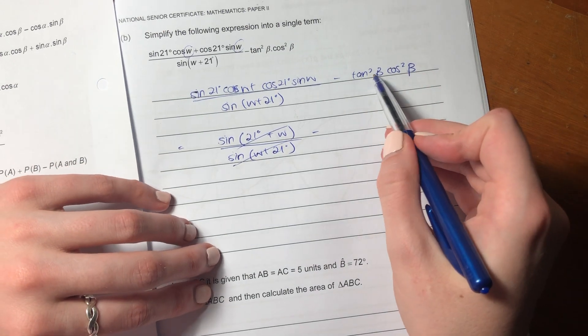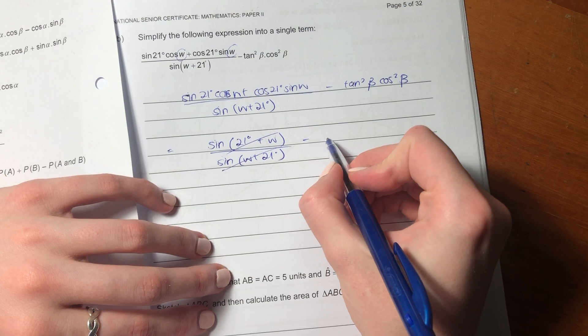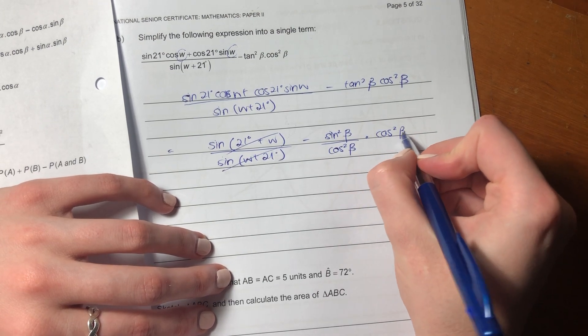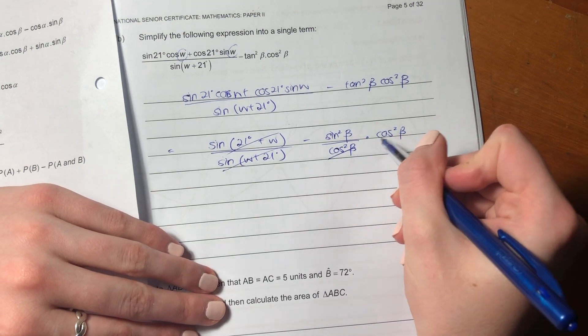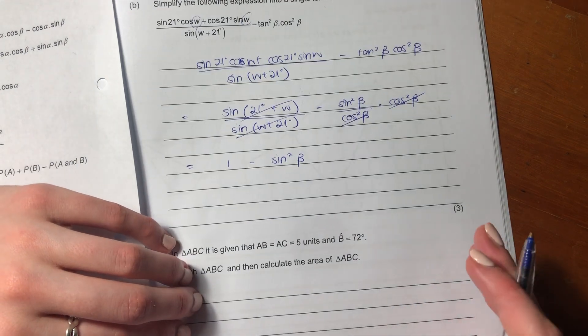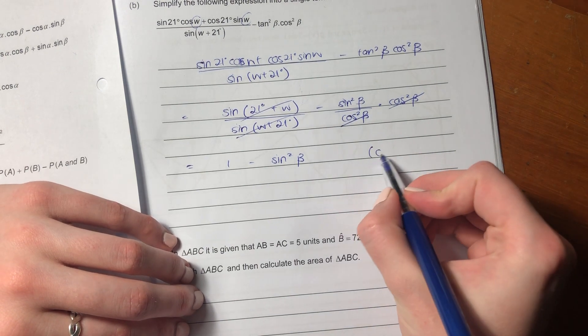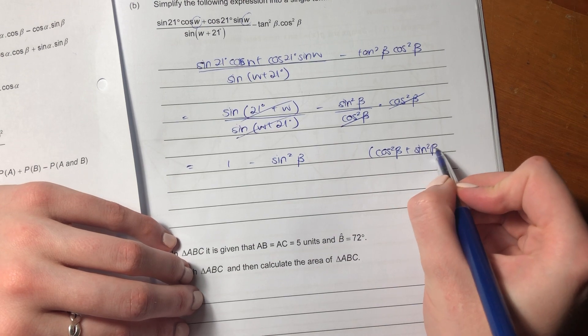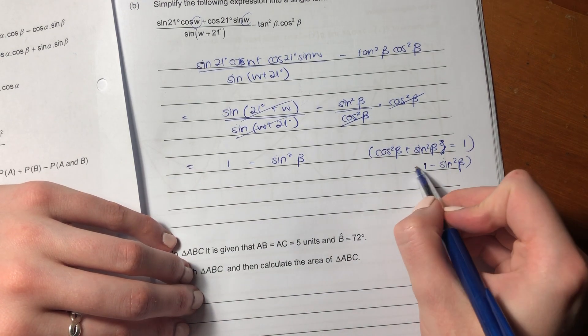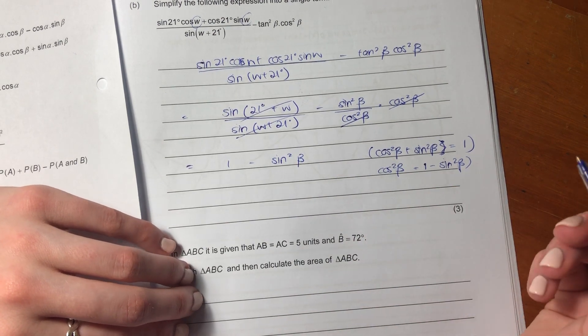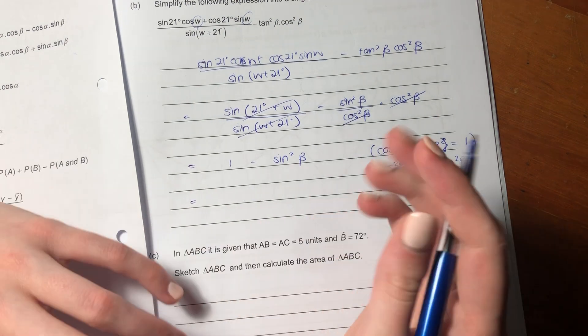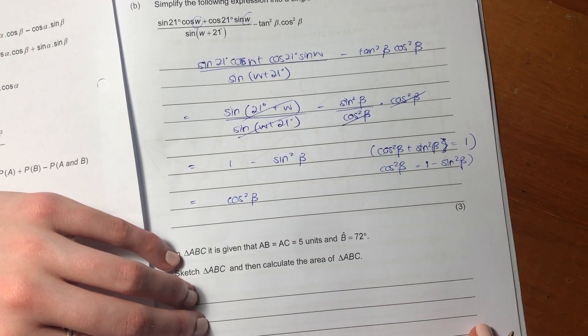Now remember that tan squared beta is the same as writing sine squared beta over cos squared beta. Again, this is not given, this is a relationship that you should be familiar with. So that cancels with that, and now we have 1 minus sine squared beta. And now you might be saying we haven't got to our single term, but remember that cos squared beta plus sine squared beta equals 1. So 1 minus sine squared beta actually equals cos squared beta. Do you see that?